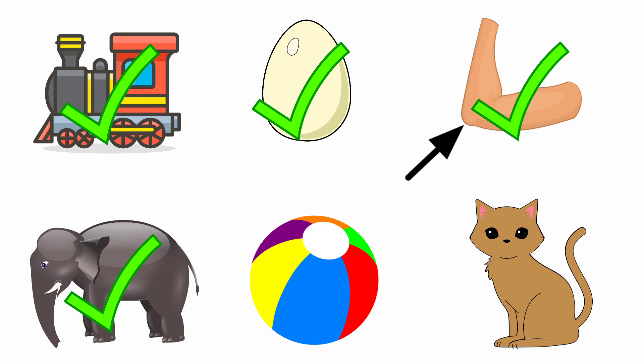Last one — cat. The beginning sound of the picture 'cat' is 'K', and the sound of the letter E is 'eh'. The beginning sound of the picture 'cat' and the sound of the letter E are different. So we should not tick the picture cat.